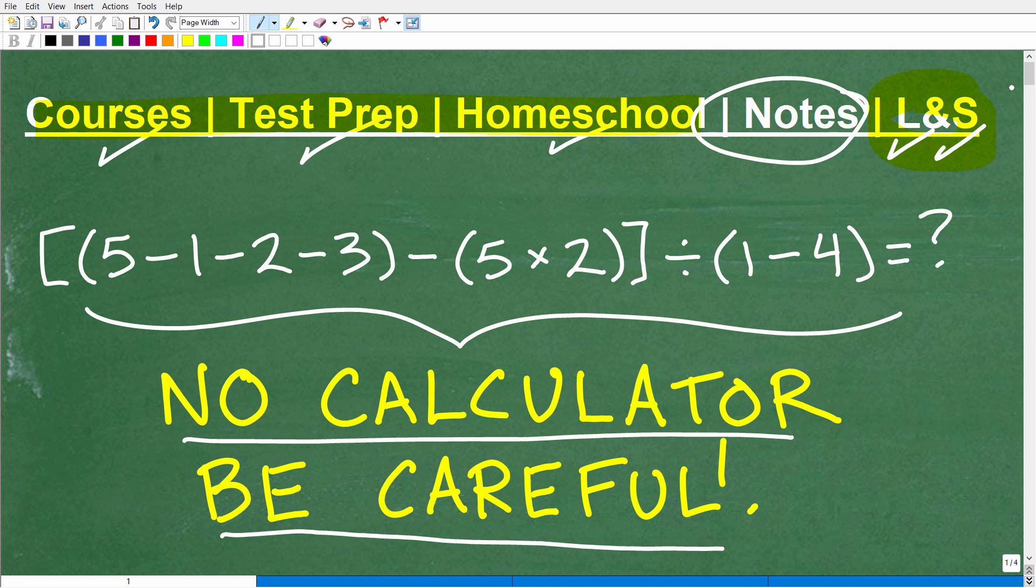And if this video helps you out, don't forget to like and subscribe, as that definitely will help me out. Okay, so let's go ahead and take a look at the answer here. We have a bracket, parentheses, 5 minus 1 minus 2 minus 3, close parentheses, minus parentheses, 5 times 2, close parentheses, close bracket, divided by parentheses, 1 minus 4, close parentheses. Boy, that's a lot of stuff.